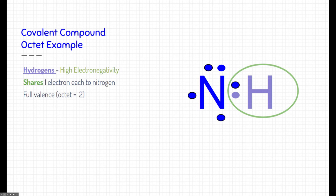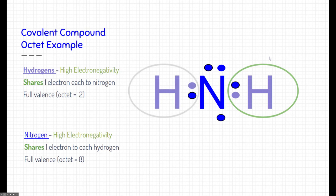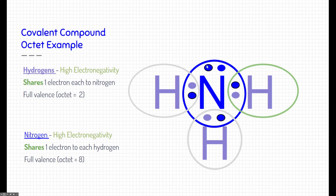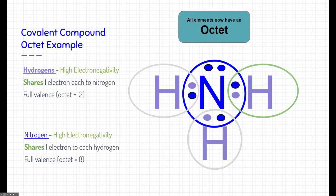Nitrogen, on the other hand, will share one with each of the different hydrogens. So we will also get an octet. If you count all the valence electrons around it right now, it's sharing a total of eight. All elements now have an octet.